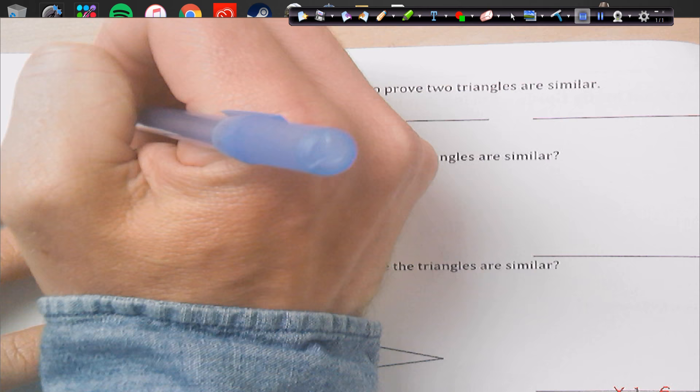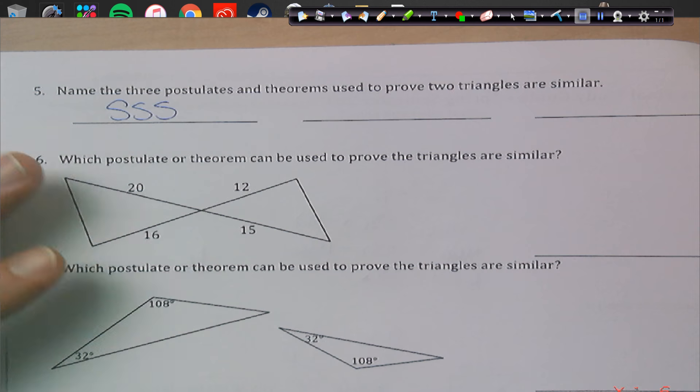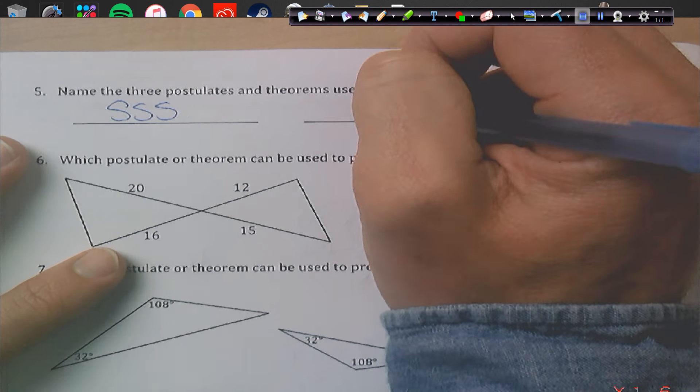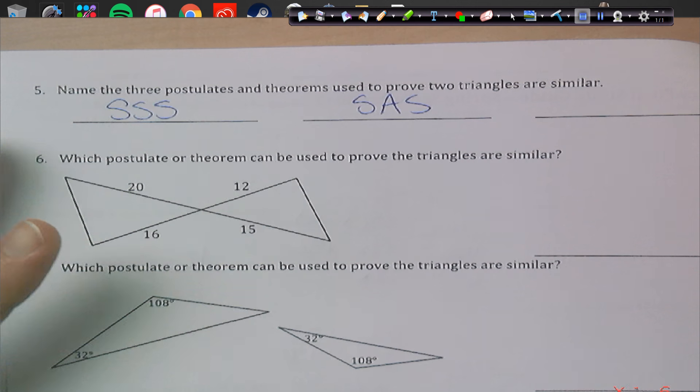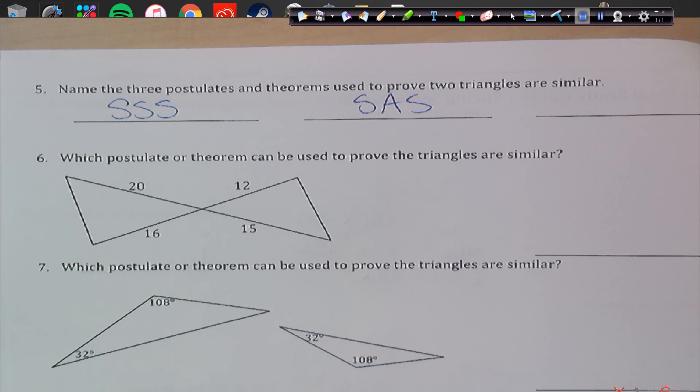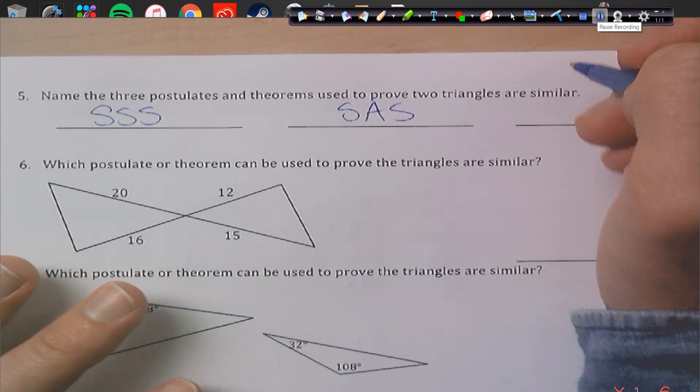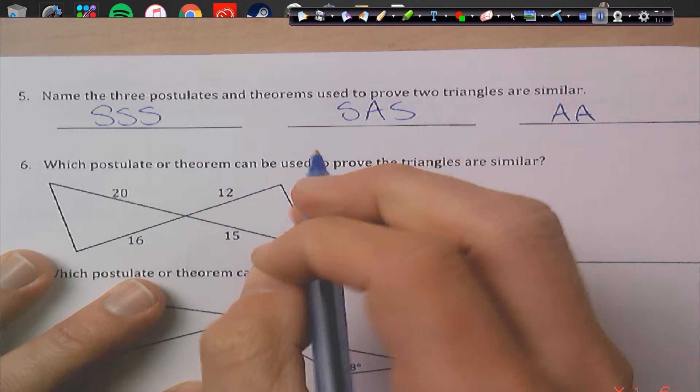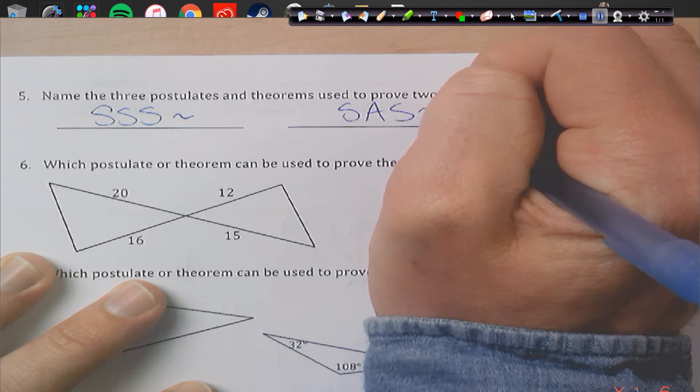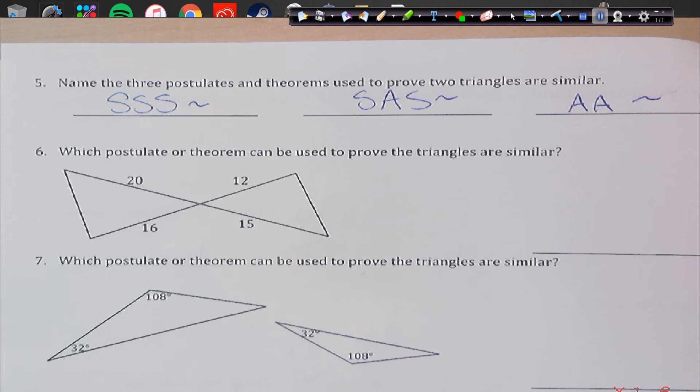Alright, so we have side, side, side. Okay, side, angle, side. Okay, and then this last one usually gets kind of confused with a lot. It's not angle, side, side. Can't have that. Remember that. Okay, so it's not that, but it's just angle, angle. So those are our different types of similarities, and we use this little squiggly guy to denote similarity.